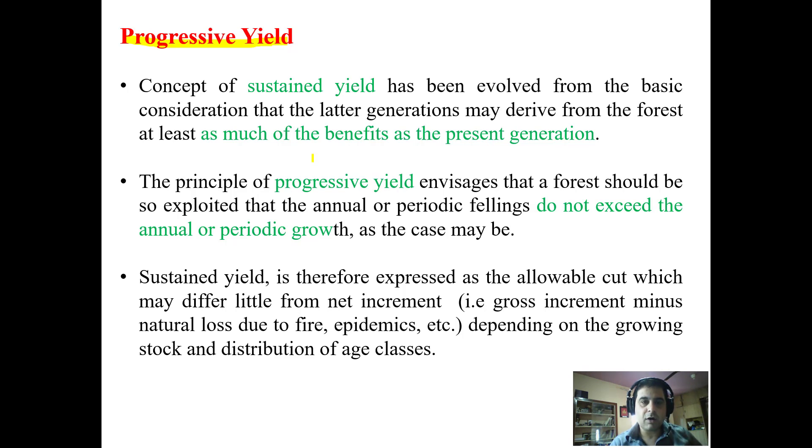So we have to think of progressive yield. The principle of progressive yield envisages that the forest should be so exploited that the annual or periodic fellings do not exceed the annual or periodic growth, as the case may be.